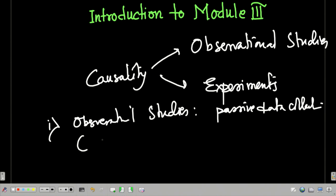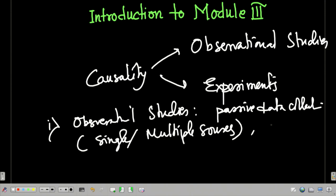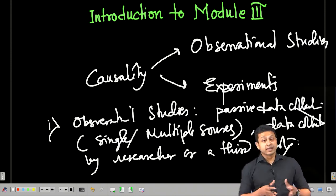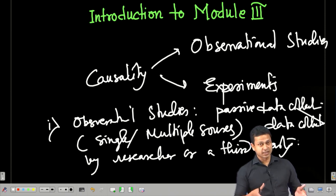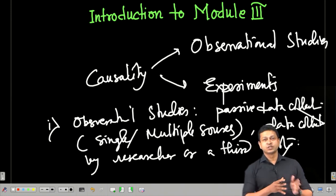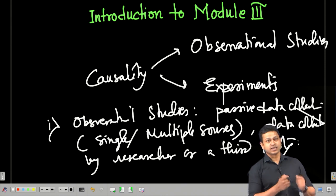Data can be collected from single or multiple sources, either by the researcher or by a third party. The whole point is that it is passive data collection — no experiment is designed. For example, we can think about data collected by national sample surveys in India, where we use the data to address our research question.